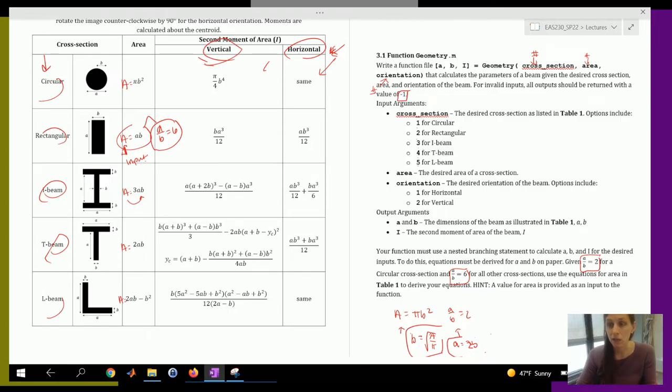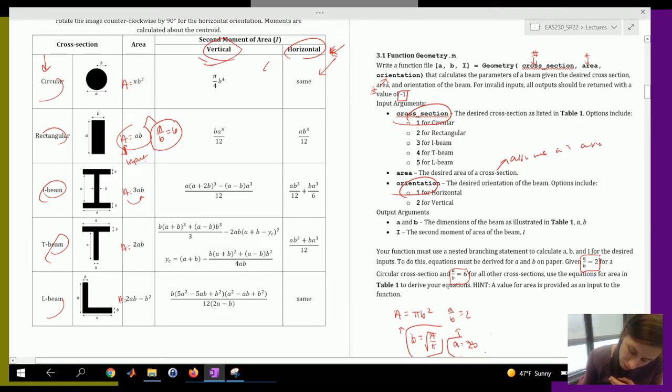Remember, if any input is invalid, so think about it as cross section being invalid and orientation being invalid, we will assume all areas are greater than zero. So assume all areas are valid.